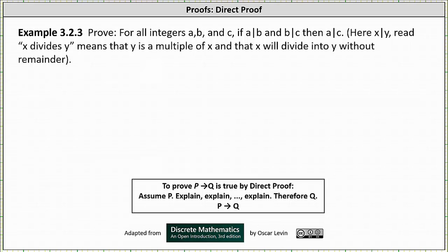Welcome to an example of a direct proof. To prove the implication if P then Q is true by direct proof, we assume P is true, we explain, and therefore Q is true.